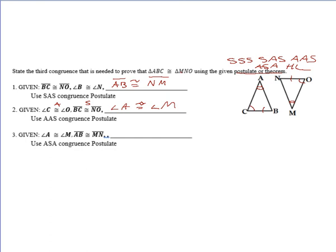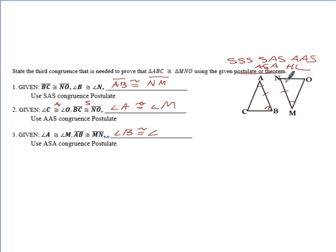For the last one: given that angle A is congruent to angle M and AB is congruent to MN, I want to use angle-side-angle. Notice I have angle and side. I would want the next angle to be here — if I put it at the other end, it would be angle-angle-side. So we need to establish that angle B is congruent to angle N. That is it for proving triangles congruent. Thank you for watching — I know it and now you know it.